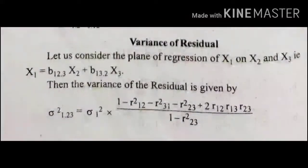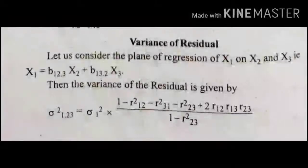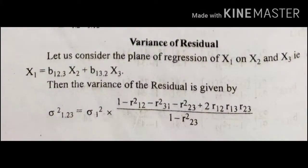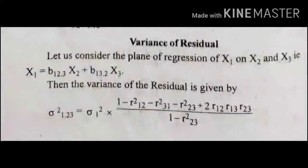Next, Variance of Residual. Let us consider the plane of regression of x₁ on x₂ and x₃: x₁ equal to b₁₂.₃x₂ plus b₁₃.₂x₃. Then the variance of residual is given by σ₁.₂₃² equal to σ₁² multiplied by (1 minus r₁₂² minus r₃₁² minus r₂₃² plus 2·r₁₂·r₁₃·r₂₃) divided by (1 minus r₂₃²).